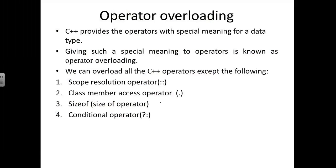The second one is the class member access operator — the dot operator. If I want to access any class member from the main program, I need to use the dot operator: object name dot the member name. The third operator is the sizeof operator, which also cannot be used for any other purpose.